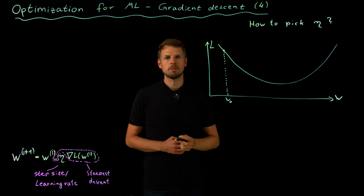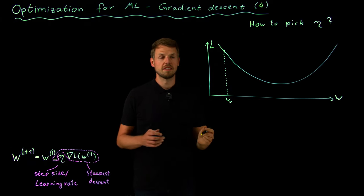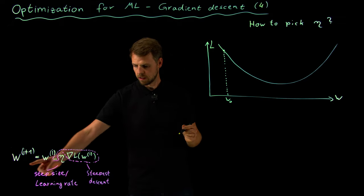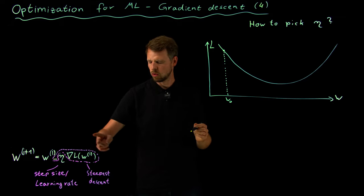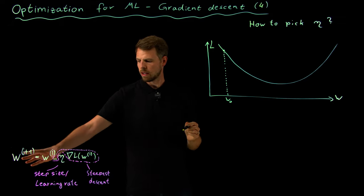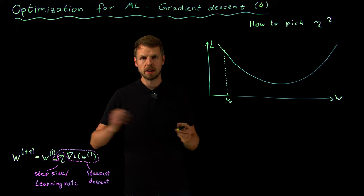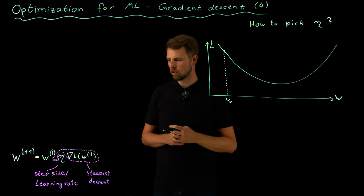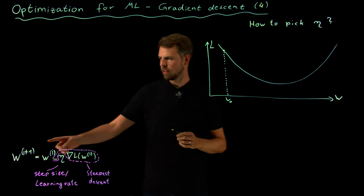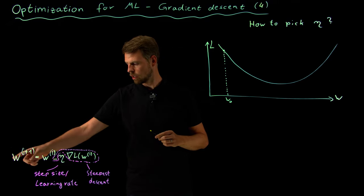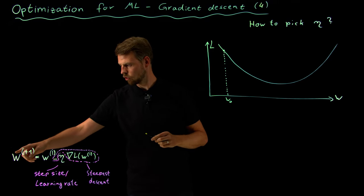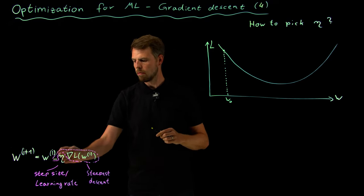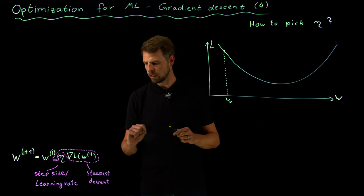Hello everyone and welcome back to gradient descent. What we have learned so far is that we can use gradients to update our weights in order to iteratively reduce our loss function value. So what you can see here in yellow and green is that w_i+1 is w_i minus eta times the gradient.